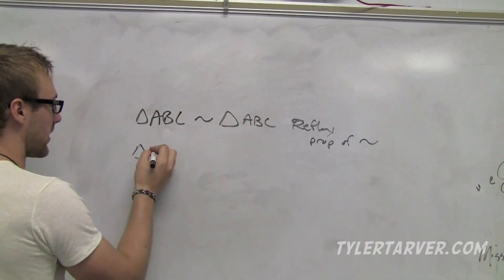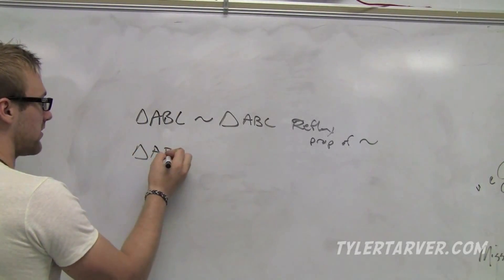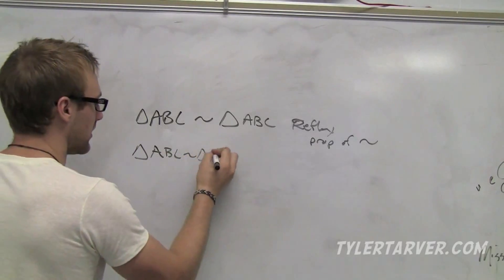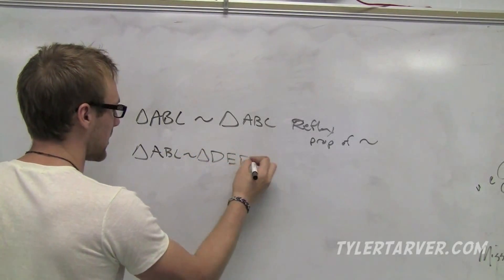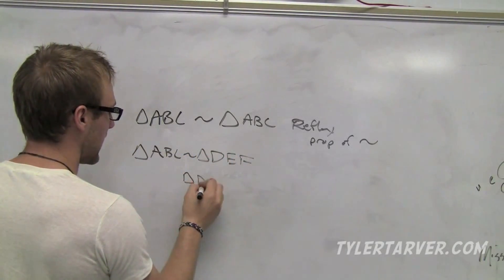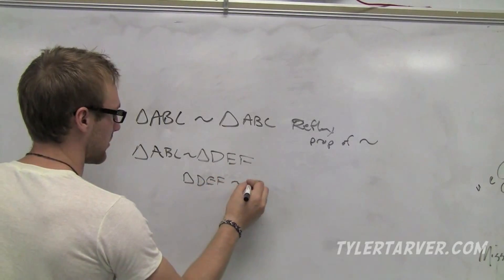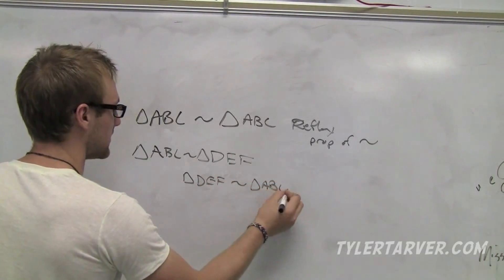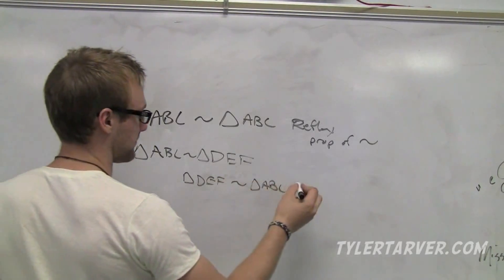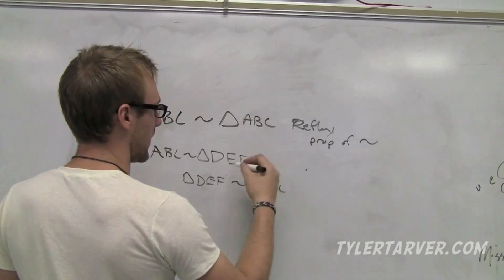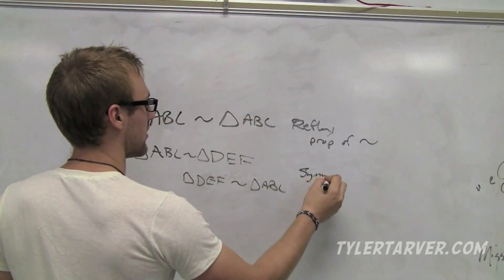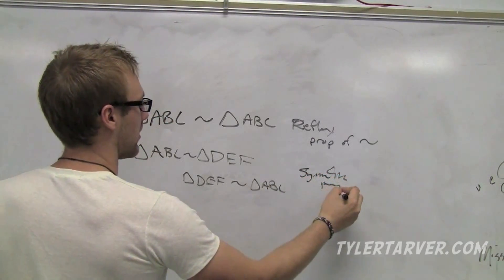Now let's do the symmetric property. Triangle ABC is similar to DEF. You know what that means? Triangle DEF is similar to triangle ABC. That's the symmetric property of similarities.